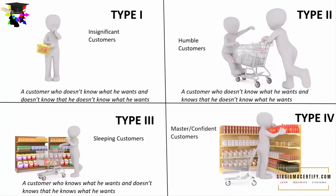And Type 4 are the masters or the confident customers. These are the customers who know what they want and know that they know what they want. They know exactly what they want and they are sure about what they want.